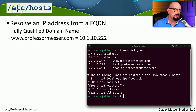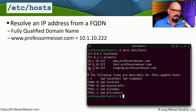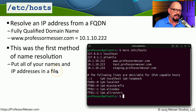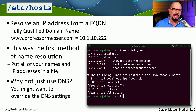Another important file in the /etc directory is called hosts. This file associates a fully qualified domain name (FQDN) with an IP address — for example, IP address 10.1.10.224 might be associated with staging.professormesser.com. Before DNS existed, the hosts file provided name-to-IP resolution. Adding single lines doesn't scale well, which is why DNS became the better choice, but the hosts file still exists. Entries in the hosts file take priority over DNS settings.